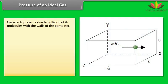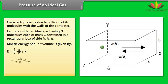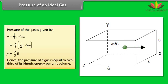Pressure of an ideal gas. Gas exerts pressure due to collision of its molecules with the walls of the container. Let us consider an ideal gas having N molecules, each of mass M, contained in a rectangular box of site LX, LY, LZ. Kinetic energy per unit volume is given by E is equal to half rho VRMS square. Pressure of the gas is given by E is equal to 2 by 3 of E. Hence, the pressure of a gas is equal to two third of its kinetic energy per unit volume.